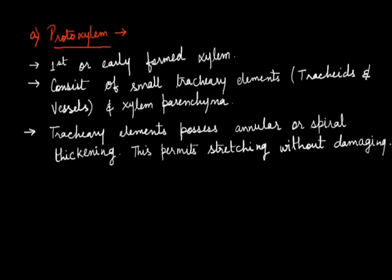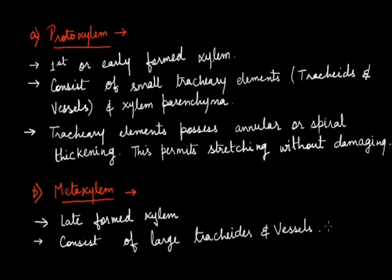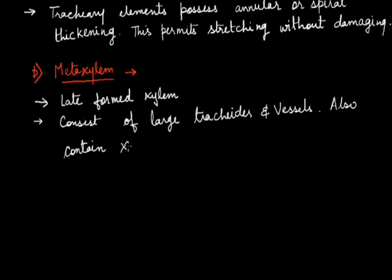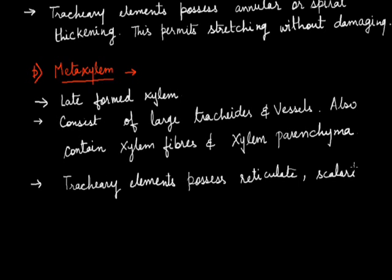Meta-xylem is formed late, after proto-xylem. Since proto-xylem consists of small tracheary elements, meta-xylem consists of large tracheary elements. Besides tracheary elements, meta-xylem also contains xylem fibers and xylem parenchyma. The tracheary elements of meta-xylem possess reticulate, sclariform, or pitted thickening, which is in contrast to proto-xylem.